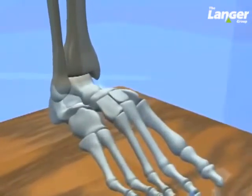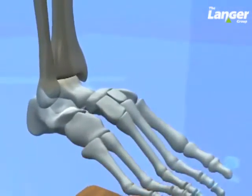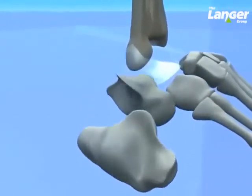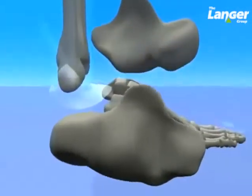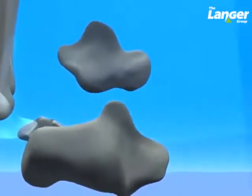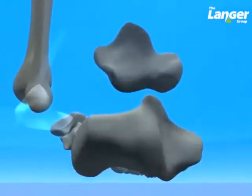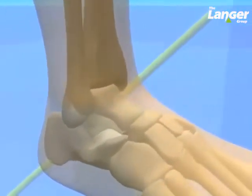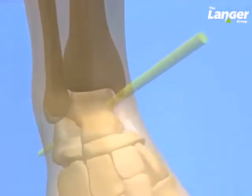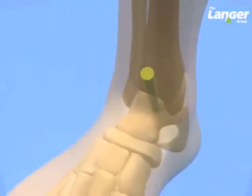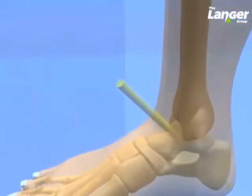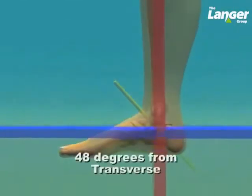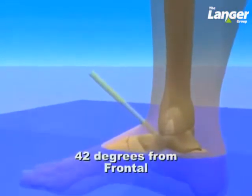This portion of the illustration will focus on the subtalar joint, which lies inferiorly to the tibiotalar joint. It exists between the anterior, middle, and posterior facets on the plantar surface of the talus, and the anterior, middle, and posterior facets of the dorsal surface of the calcaneus. The orientation of the subtalar axis is that of a pronatory and supinatory joint, which runs lateral, posterior, and plantar to medial, anterior, and dorsal, and can be demonstrated to bisect the posterior facet of the calcaneus. The degrees of orientation of the joint axis relative to the three cardinal body planes are 48 degrees from the transverse plane, 42 degrees from the frontal plane, and 16 degrees from the sagittal plane.